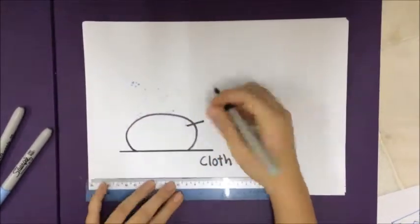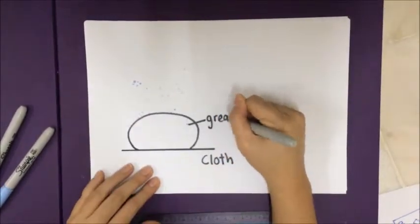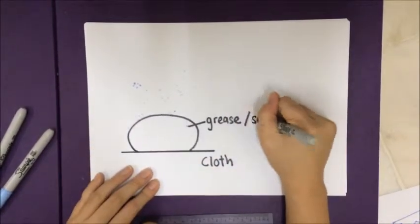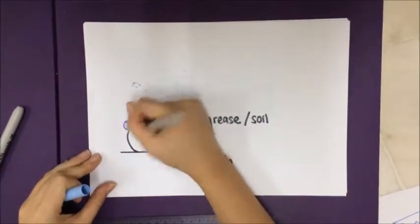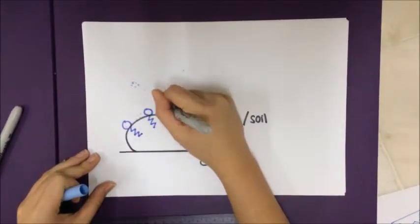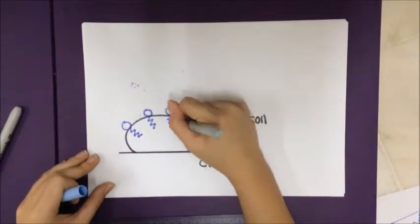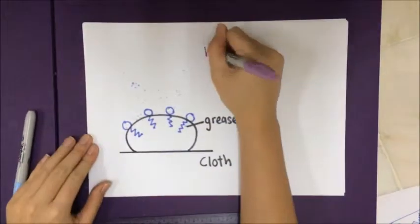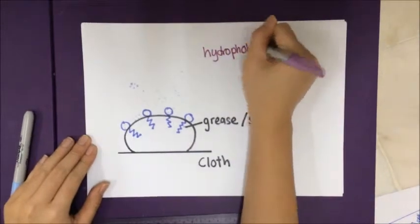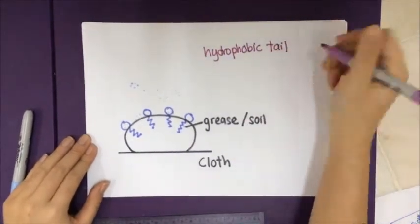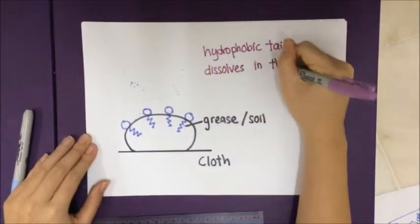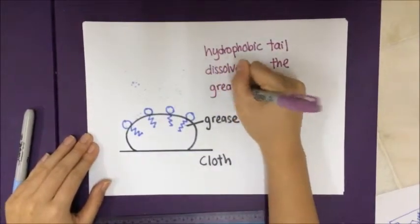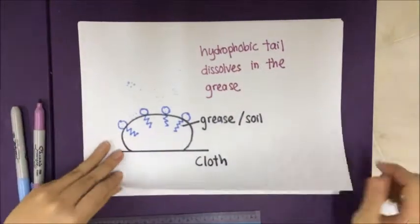We will look at the surface of the cloth, where the hydrophobic tail will dissolve into the grease particle on the soiled clothes, while the hydrophilic head remains on the outer surface of the grease particle.